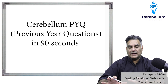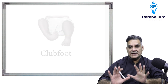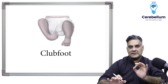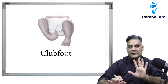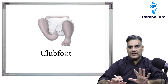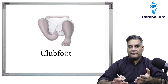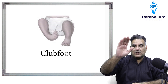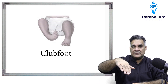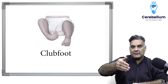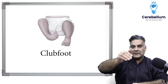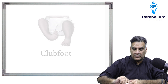Hi friends, this is Dr. Apoor Mehra and I'm going to talk about club foot, CTEV, one of the commonest congenital deformities in our country. When we look at this foot deformity, it has four components: equinus at ankle, varus at subtalar joint, adduction at forefoot and midfoot, and increased plantar arch called as cavus.